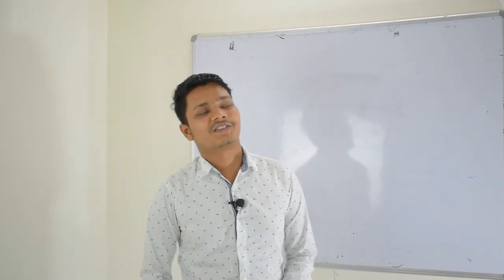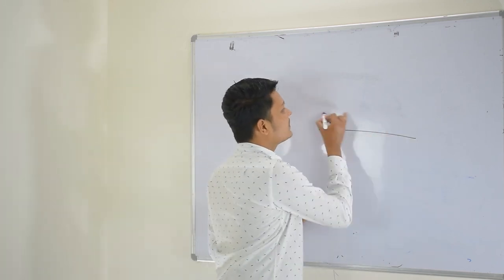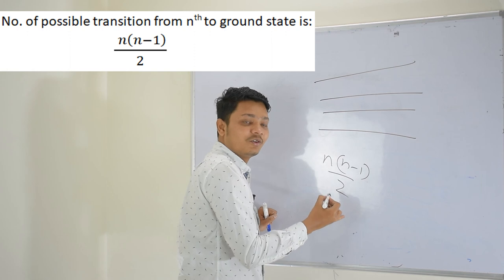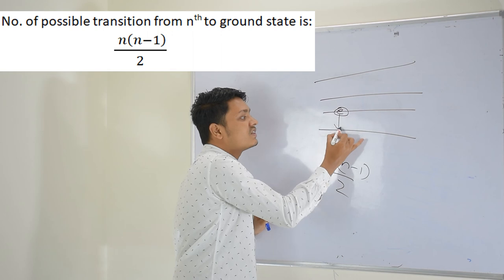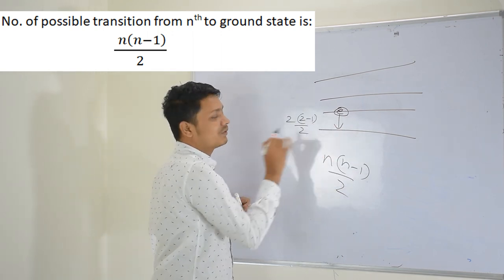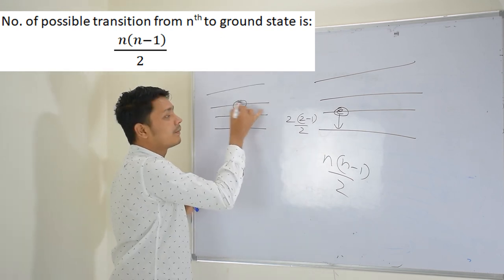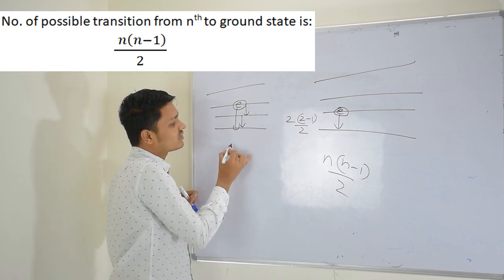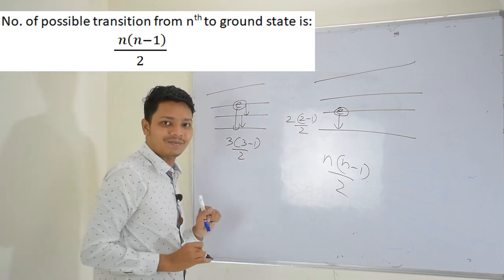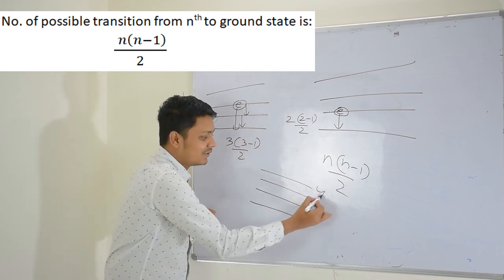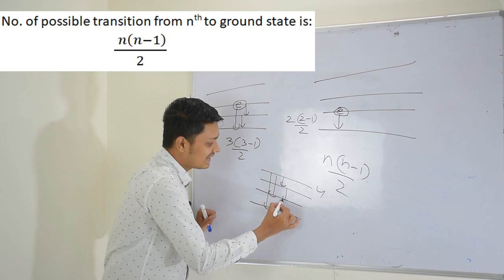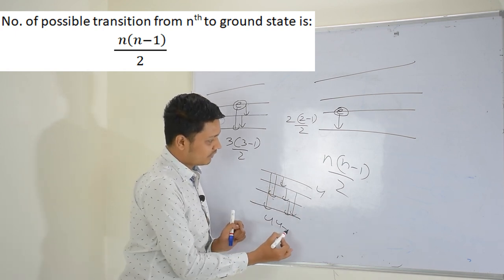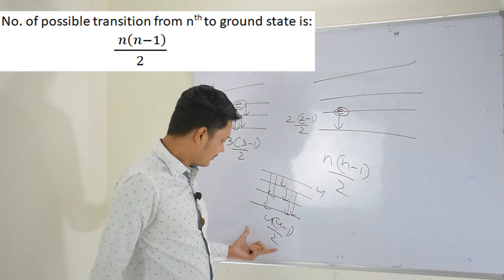Let me tell you one more concept. If an electron is in the nth state, the number of possible transitions is N times (N minus 1) divided by 2. So if an electron is in the third state (N equals 3), the number of possible transitions is 3 times 2 divided by 2, which equals 3. If the electron is in the fourth state, the number of possible transitions is 4 times 3 divided by 2, which equals 6. We will solve questions from this later.